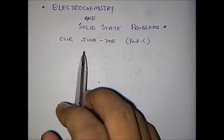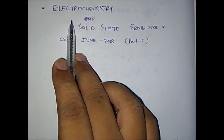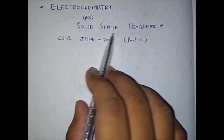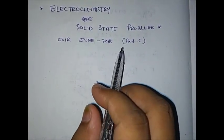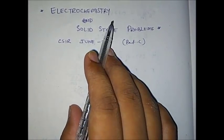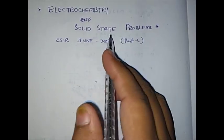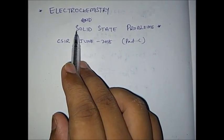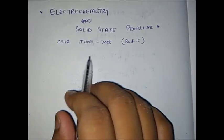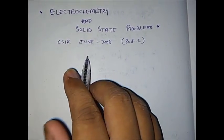Hello everyone and welcome to the channel. Today in this video we are going to discuss problems asked from electrochemistry and solid state, especially in part C of your CSIR June 2018 exam. Many of you have requested me to solve questions especially from solid state, which was asked from an FCC crystal where you have to find the molecular mass.